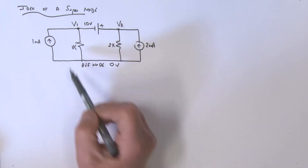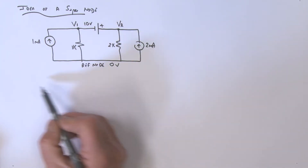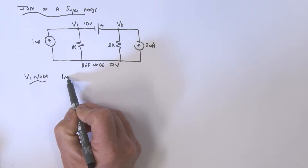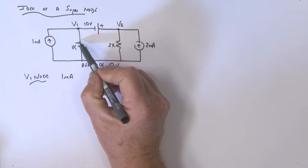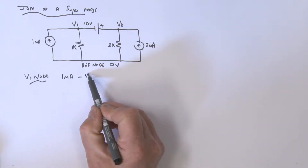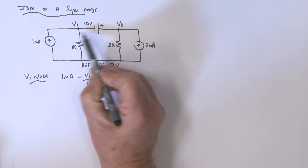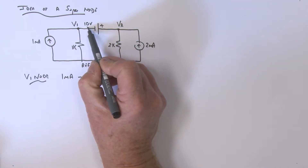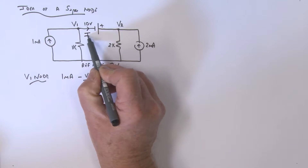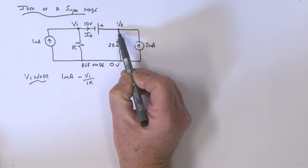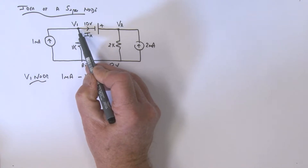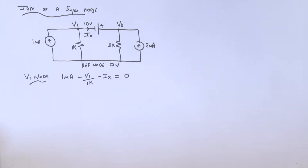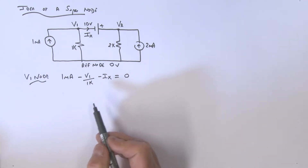Let's see what we have coming into the V1 node. We have 1 milliamp coming in. We've got this current which is minus V1 over 1k. Now this current here — I don't know what it is, so let's call it Ix, and I'm going to define it as going in that direction. From that node's point of view, that's a minus Ix. All of that is equal to zero — that's our first node equation.